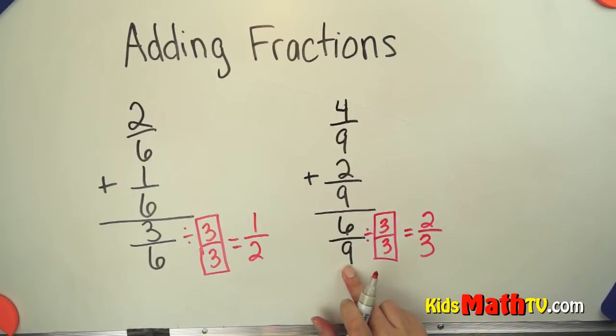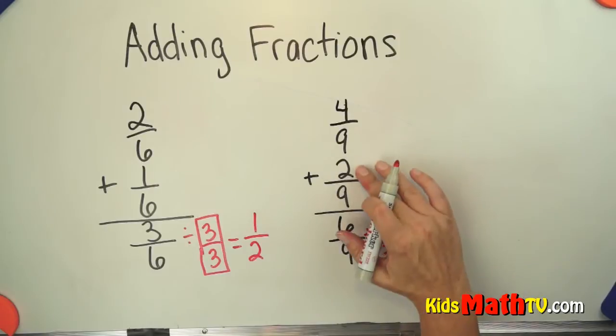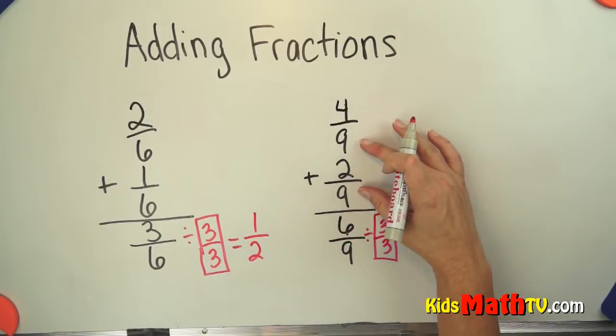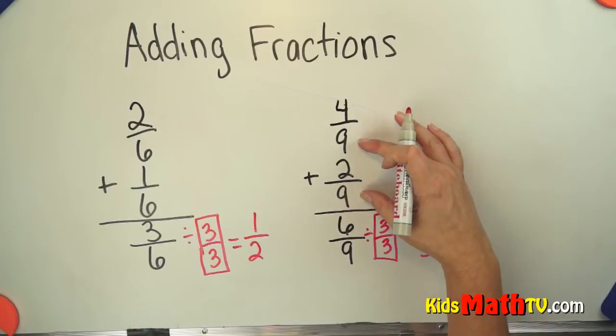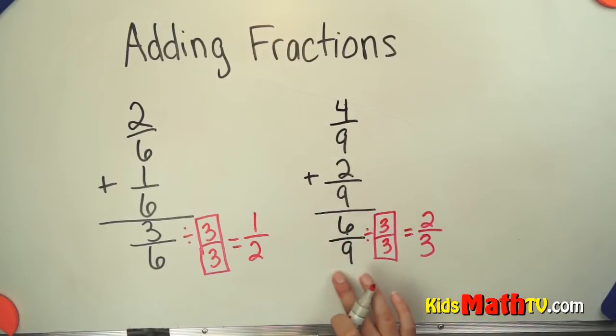So 6 ninths simplifies to 2 thirds. You simply add the numerators, the denominator stays the same as long as they are common denominators. Then you have to simplify your answer to the lowest terms. And that's the end of our lesson on adding fractions.